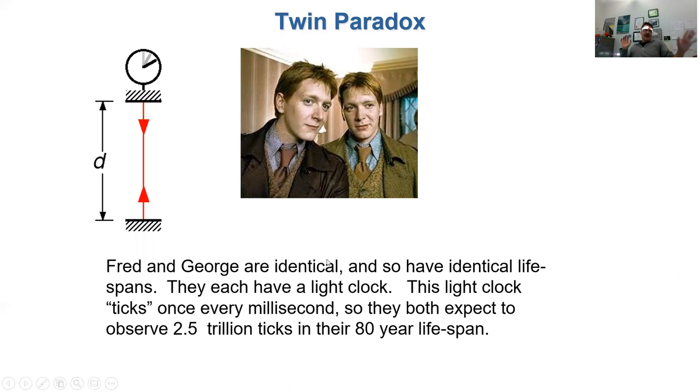So bear with me here. Fred and George are identical. And so they have identical lifespans. And they each hold a light clock. And the light clock ticks every millisecond. So if you multiply that out, if they're going to live for 80 years, each one of them should expect to look at their light clock and see count off the 2.5 trillion ticks over their life before they would expect to die.